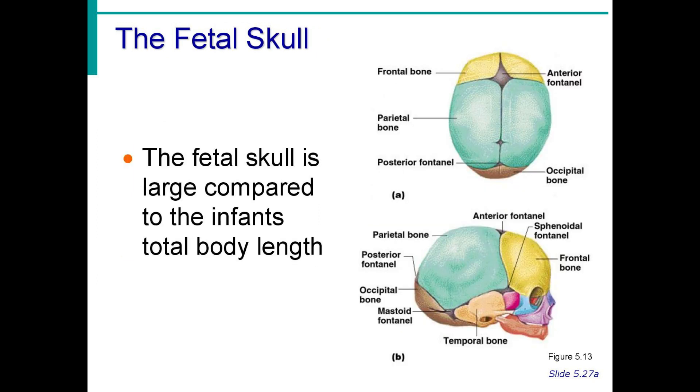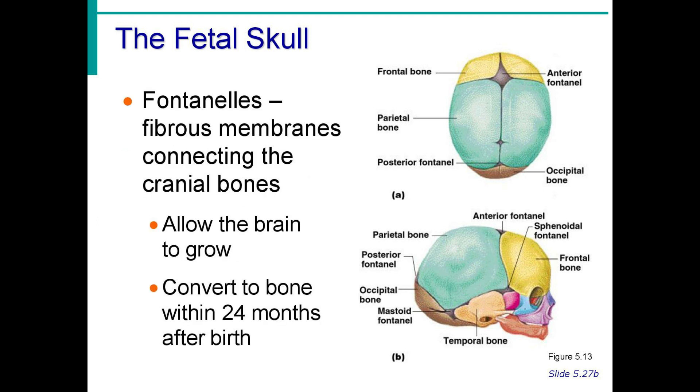The fetal skull is different because the flat bones of the cranium have not yet met to form sutures. As a result, there are six fibrous areas called fontanels.